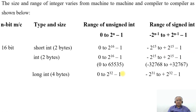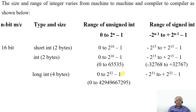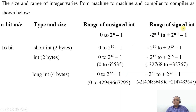Then we have the long int, which is 4 bytes. That means it will be 2 to the power of 32 minus 1. Applying n equal to 32, for signed it will be minus 2 to the power of 31 to plus 2 to the power of 31 minus 1. So the long int will have 4 bytes, ranging from 0 to 4,294,967,295 for unsigned, and minus 2,147,483,648 to plus 2,147,483,647 for signed.